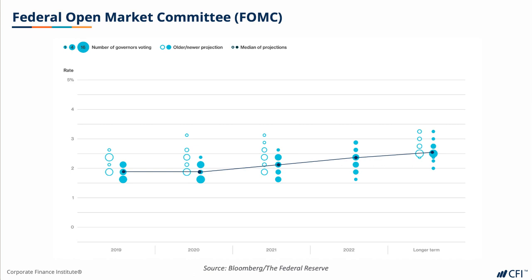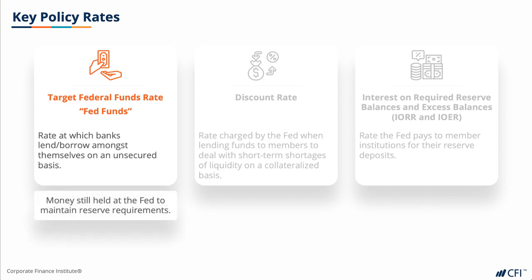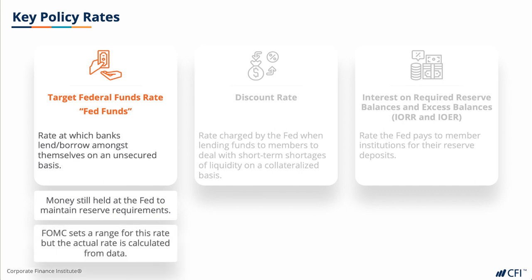At 2 p.m. Eastern Time on the second day of the FOMC, the FOMC releases all of their policy rates. The first and most famous of these is the target federal funds rate, known in the market as the Fed Funds rate or simply as Fed Funds. This is the rate that the Fed targets as a lending rate between member depository institutions on an unsecured basis to ensure that they meet reserve requirements — in other words, money still held at the Fed to maintain reserve requirements. Keep in mind that while the FOMC sets a range for this rate, the actual rate is calculated using volume-weighted data on overnight federal funds transactions provided by domestic banks and the US branches and agencies of foreign banks.